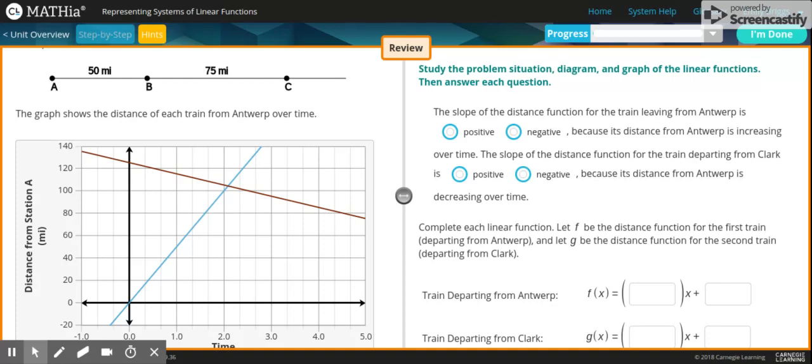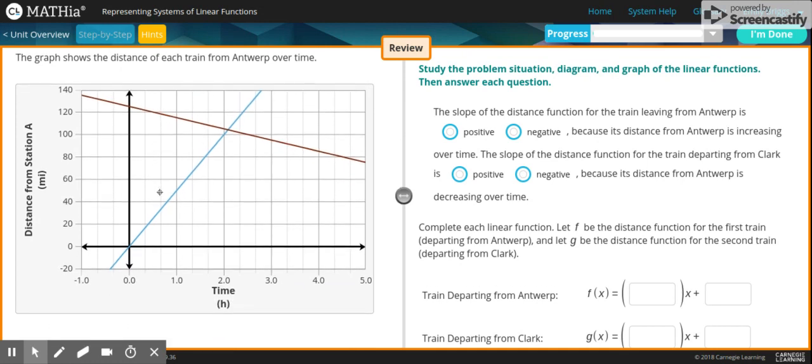So it says, study the problem, situation, diagram, and graph of the linear functions. Then answer each question. The graph shows the distance of each train from Antwerp over time. So distance from station A, and then the time it takes.